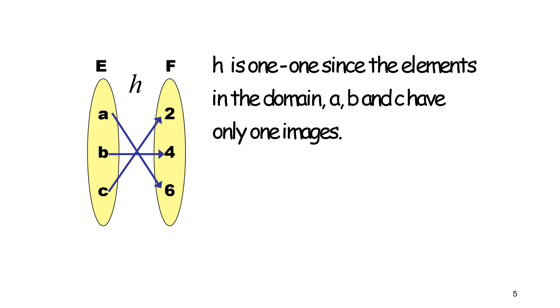So h is one-to-one since the elements in the domain a, b, and c have only one image. And also, h is an onto function since h of E is equal to F.